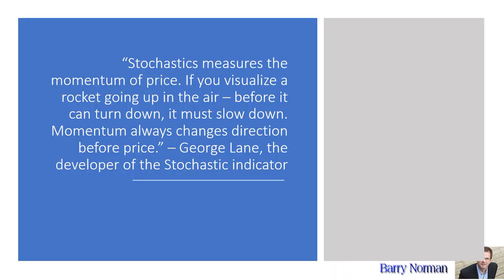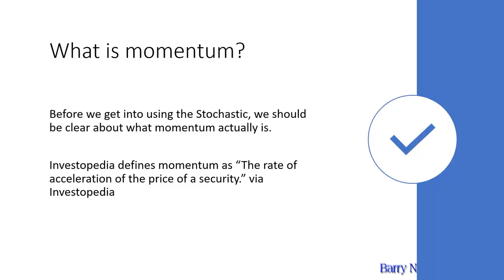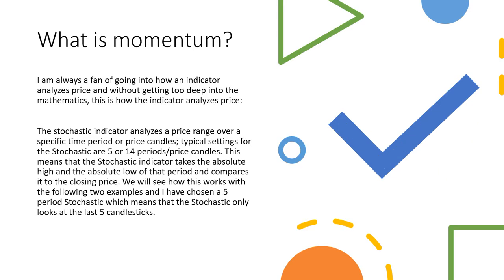Stochastics measures the momentum of price. If you visualize the rocket going up in the air, before it can turn down it must slow down. Investopedia defines momentum as the rate of acceleration of the price of the security at the moment. The Stochastics indicator analyzes the price range over a specific period of time — 14 is the standard. This means the Stochastics indicator takes the absolute high and the absolute low of that period and compares it with the closing price.